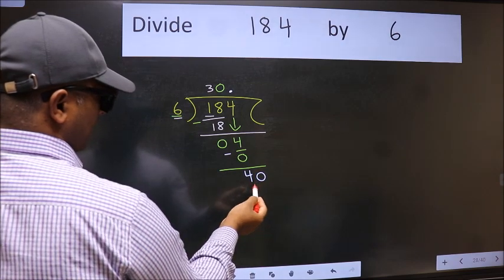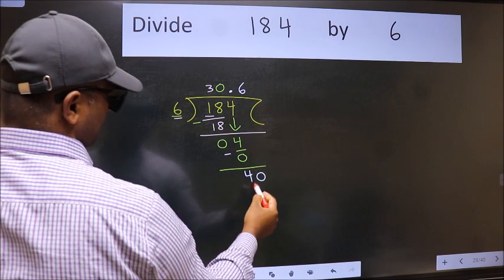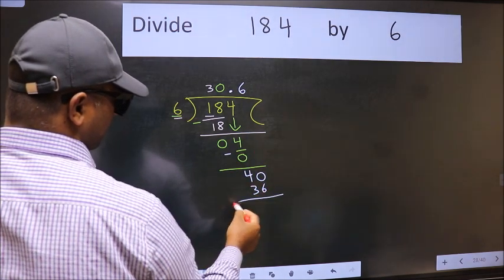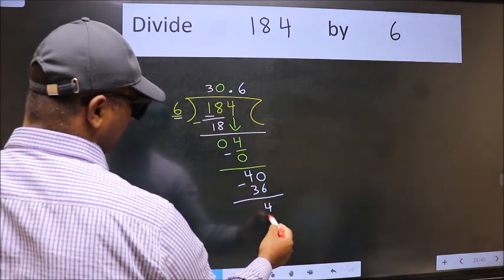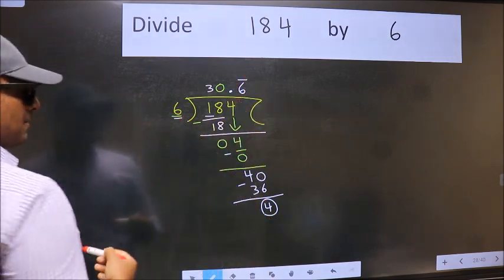So now we can put dot and take 0, so 40. A number close to 40 in 6 table is 6×6, 36. Now we subtract. We got 4 again. That means we get bar on this number.